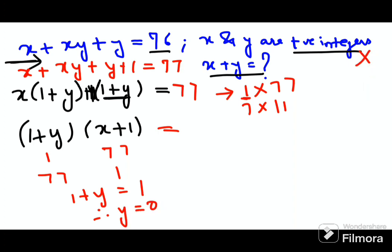And that is not a positive integer. So obviously we can't take this particular value of 1 × 77 as the factor.